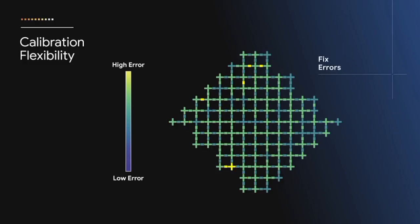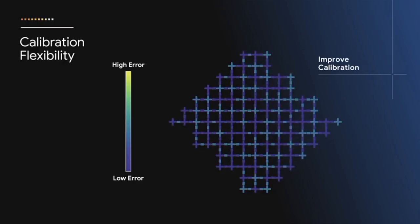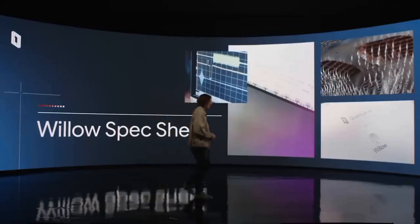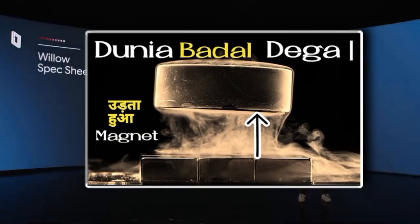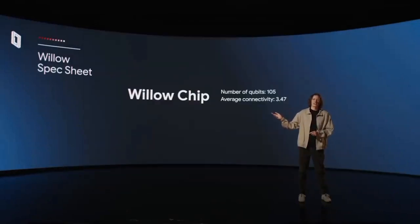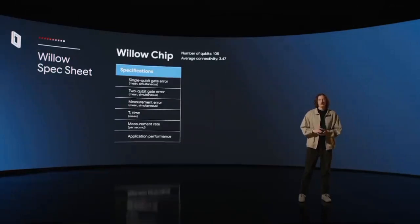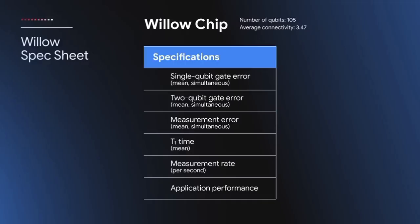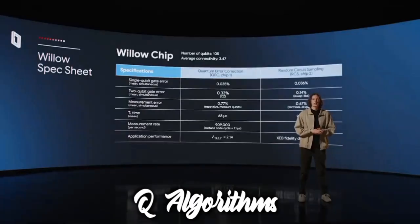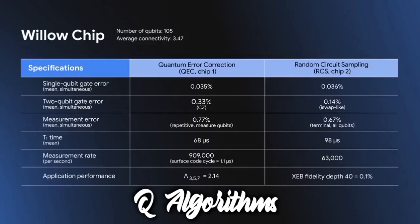While Willow brings us closer to practical quantum computing, several challenges remain. Quantum decoherence, the tendency of qubits to lose their quantum state due to external interference, is still a major hurdle. Despite Willow's advancements, maintaining the stability of qubits over longer periods remains difficult, and scaling the technology to handle even more qubits is a significant engineering challenge. Moreover, the computing power of a quantum chip like Willow comes with the need for ultra-cold environments. Qubits must be kept at temperatures close to absolute zero, which requires specialized and expensive cryogenic equipment for widespread adoption. Another obstacle is the development of quantum algorithms that can efficiently harness the power of quantum computers. While Google's Willow chip can perform impressive computations, the algorithms that fully utilize its capabilities are still being developed. Quantum software needs to evolve alongside the hardware to unlock the true potential of these machines.